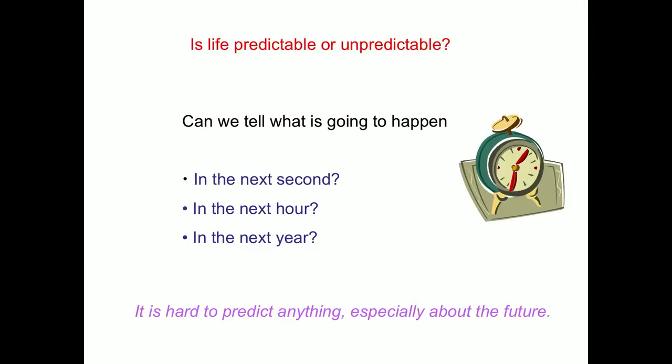But some things we can't predict at all in a year. I can predict in an hour's time reasonably accurately what the weather will be. But I certainly can't predict in a year's time what the weather will be, other than to say it will be autumnal. So here's a lovely quote from Niels Bohr: It is hard to predict anything, especially about the future.